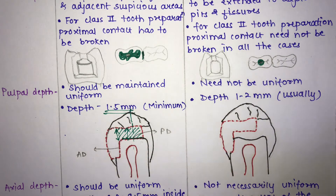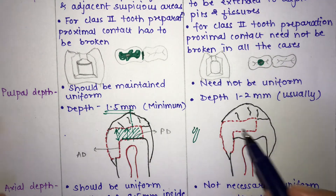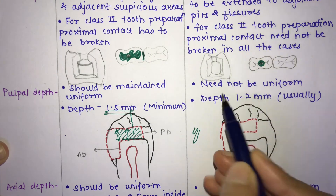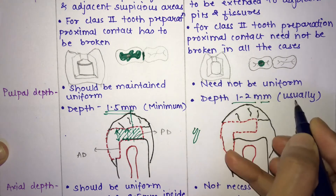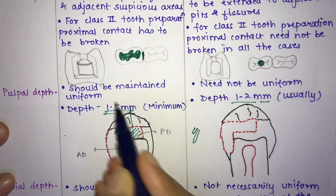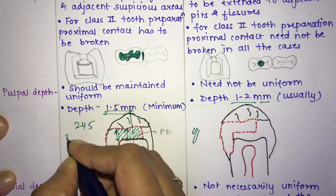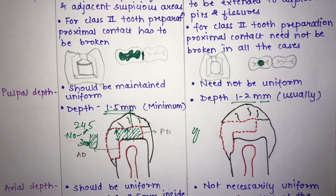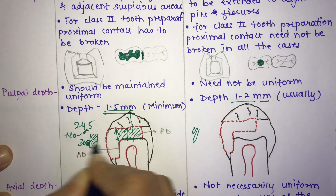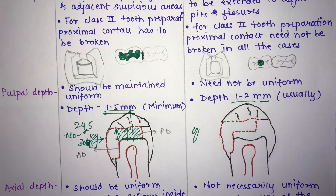Amalgam does not adhere to the tooth micromechanically. In composite, we do etching and apply a dentin bonding agent, creating micro-tags for bonding. For composite, the pulpal wall need not be uniform and the depth is 1 to 2 mm. To measure the 1.5 mm depth for amalgam, use the number 245 bur — it is 3 mm long, so half of it inside the preparation gives you the 1.5 mm minimum pulpal depth.